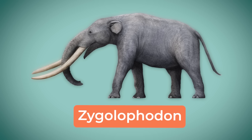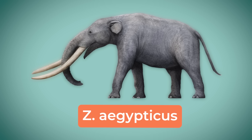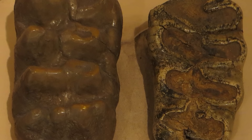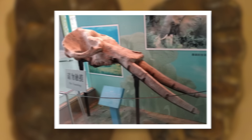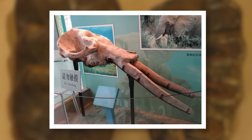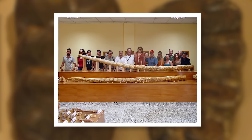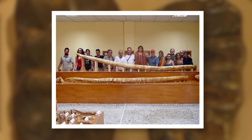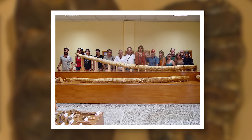Moving along, we've got Zygolophodon. This Proboscidean also evolved during the early Miocene, with the first species, Zygolophodon aegypticus, being found in Egypt and Namibia. The name makes it clear that it inherited the dental conditions of its ancestors. Beyond that, this genus is also home to Mastodons that had very prominent tusks — among the biggest in all of Proboscidea, though as we'll soon find out, they might not have been quite the longest.